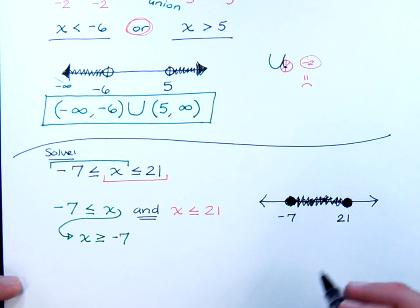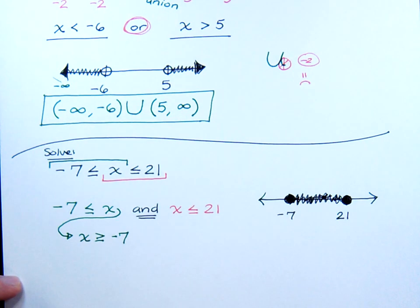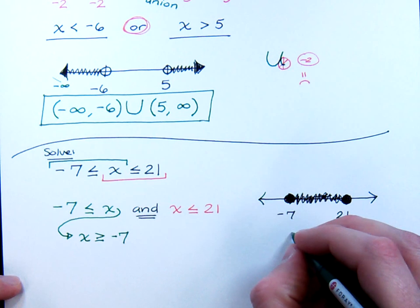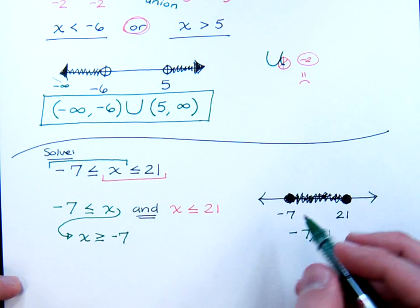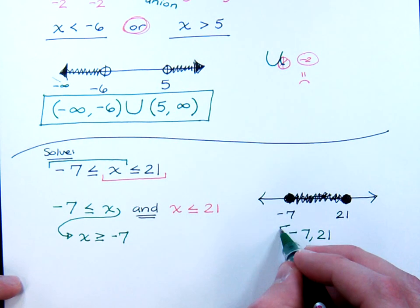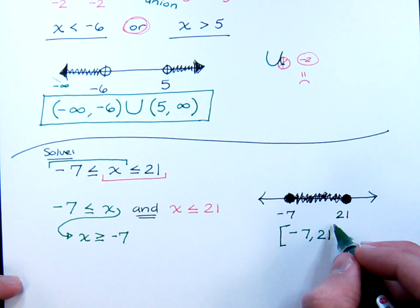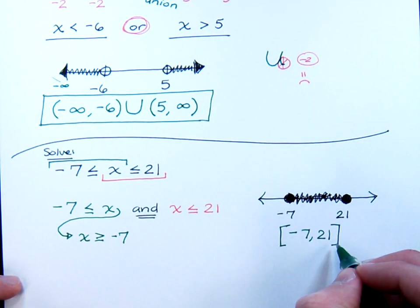And that's your solution set. So you just have to write this using interval notation. We're going from negative seven to 21. Since we have a closed circle, remember that indicates to us we need to use a bracket on both the open and the closing part of the interval.